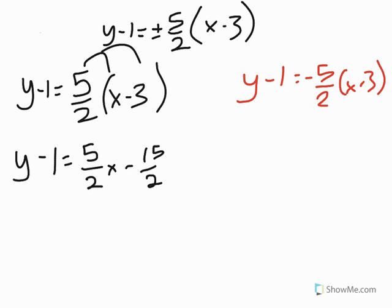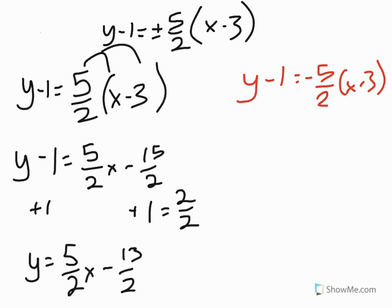And then I can add 1 to both sides of this equation. And 1 is actually the same thing as 2 halves. So that's actually what I'm going to add because I'm adding fractions, and remember you have to add common denominators. So I end up with y equals 5 halves x, and then negative 15 halves plus 2 halves ends up giving me a negative 13 halves.